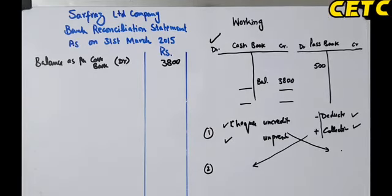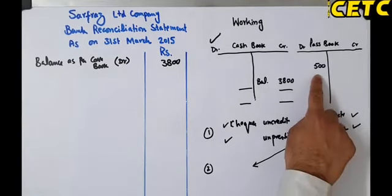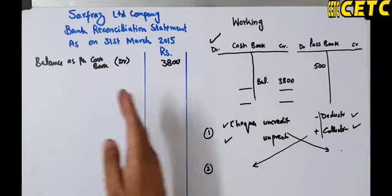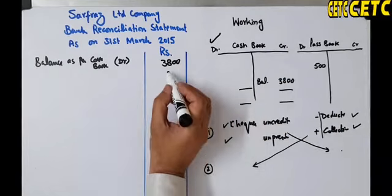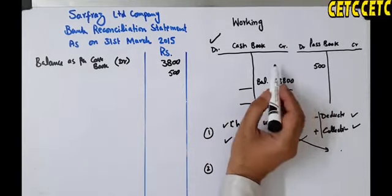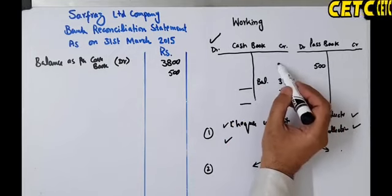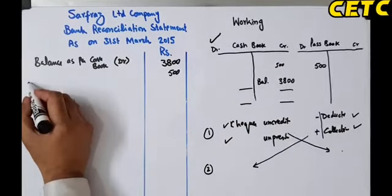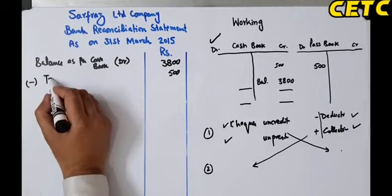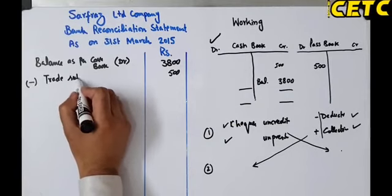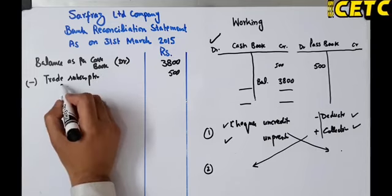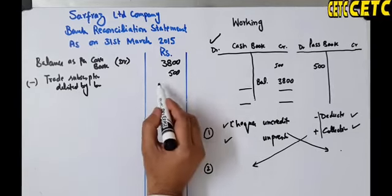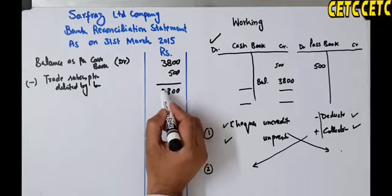Starting from balance Rs. 3800: the bank debited our account with Rs. 500 for trade subscription, which should have been credited in our cash book but wasn't. Since we are working from the cash book, we credit our book with Rs. 500 — but our balance is debit, so this is a minus. Write: Less — Trade subscription debited by bank — Rs. 500. New balance: Rs. 3300.